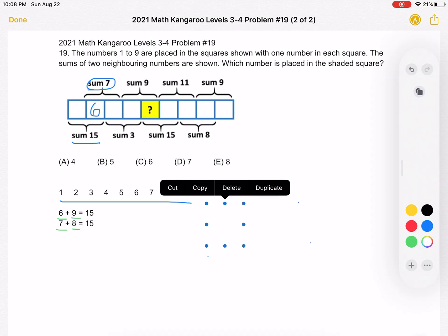We want to first figure out what goes in the box right next to 6. The way we can think about this is 6 plus what number equals 7? Well, that number must be 1.